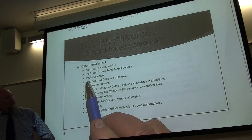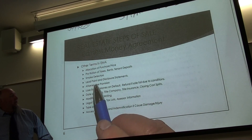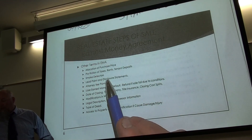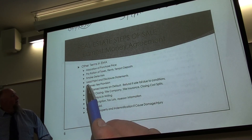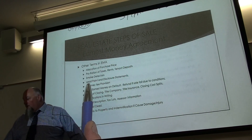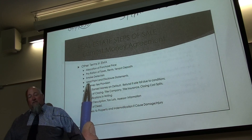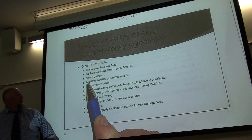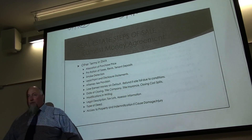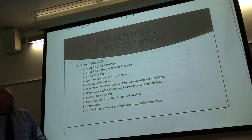In Oregon you have to have working smoke detectors, and I should also mention carbon monoxide detectors. In some places radon is required. If you have a property built before 1978, you have to give a lead paint disclosure statement about lead paint. I have a copy of that in my materials.